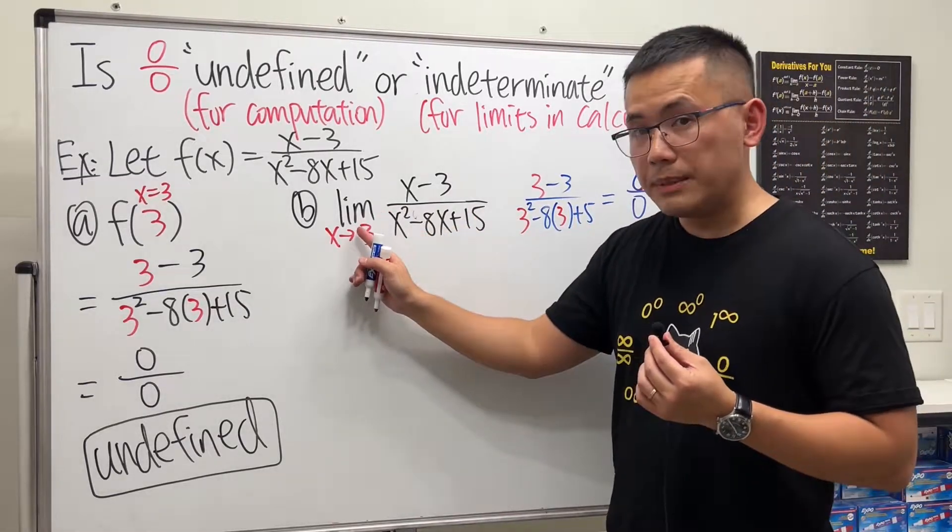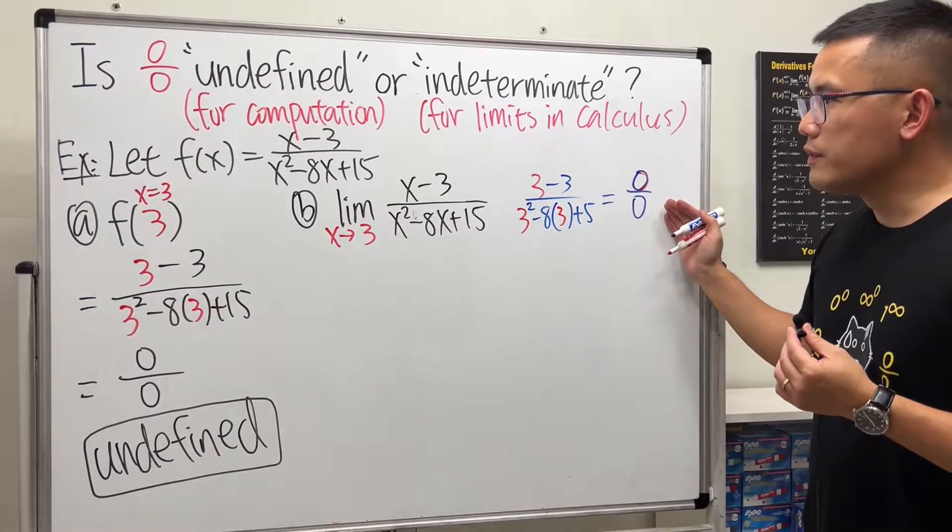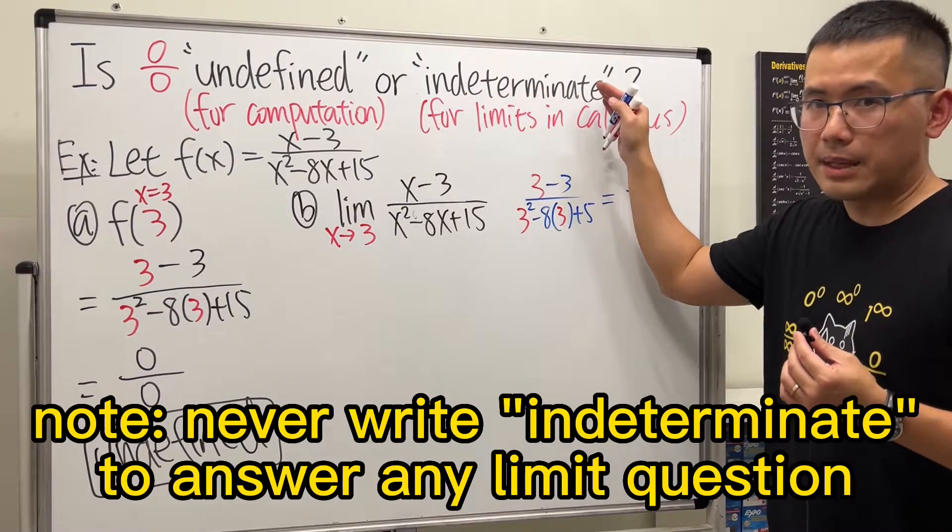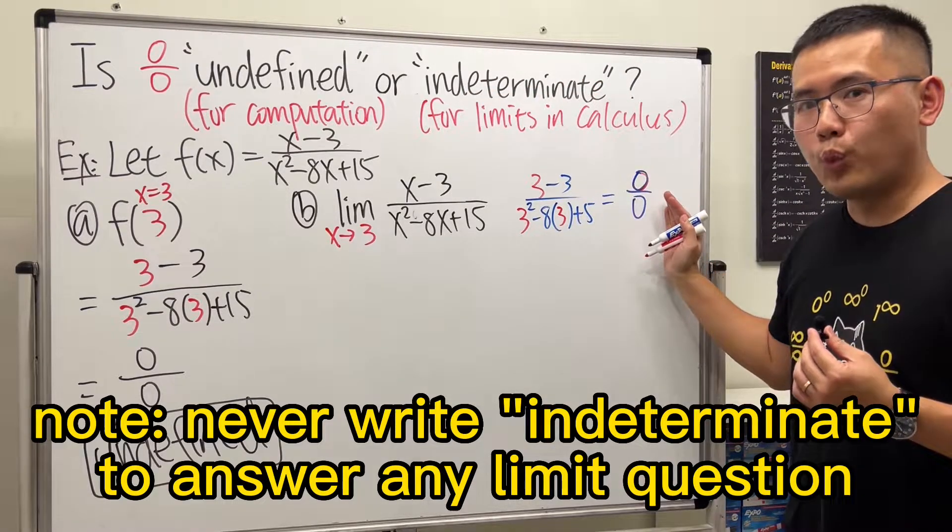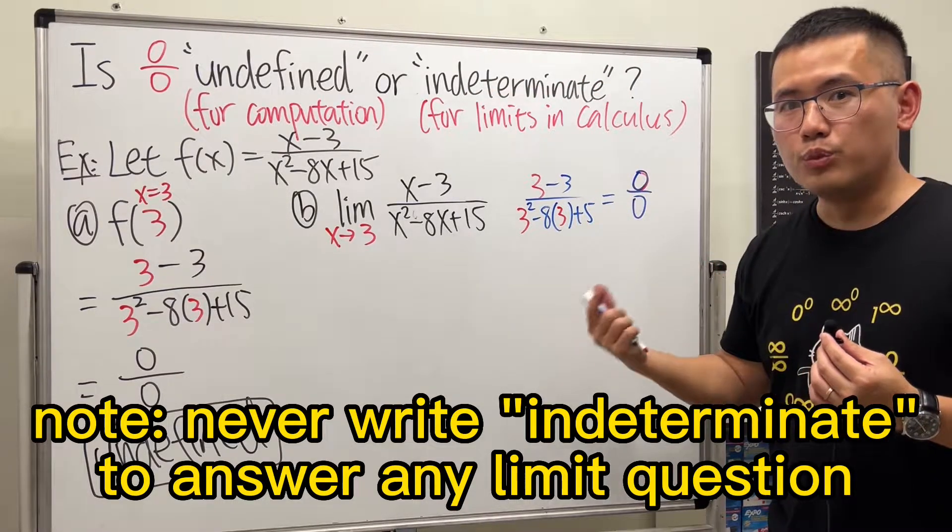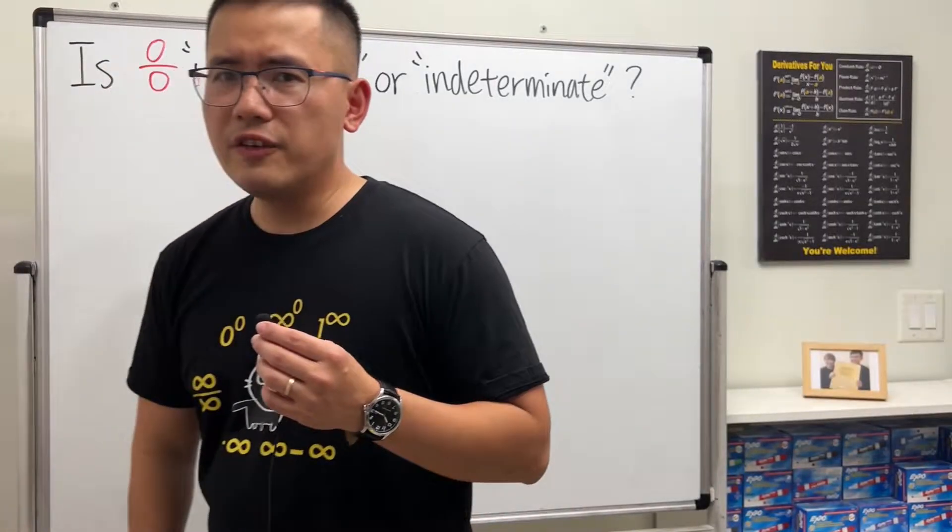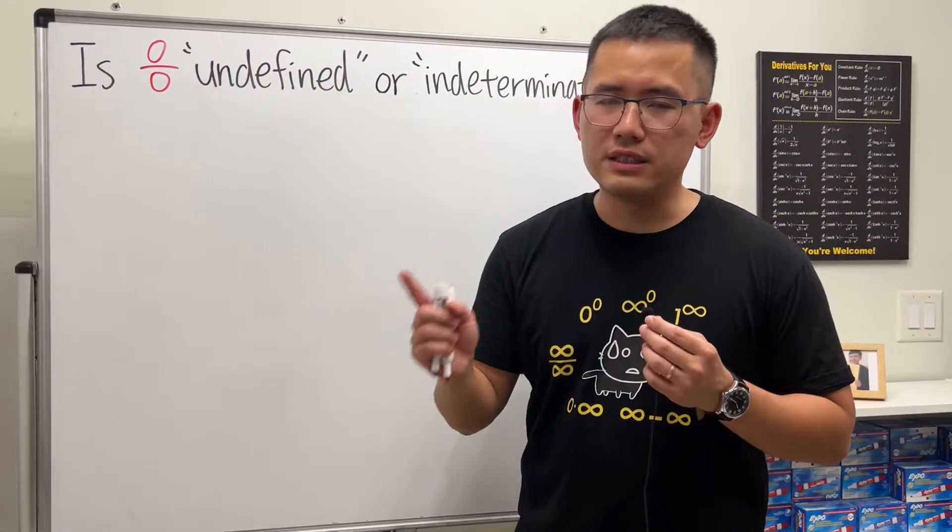Here, because we are talking about a limit question, this zero over zero is an indeterminate form. We don't know what the answer is yet unless we do more work. So what's the difference between undefined versus indeterminate?